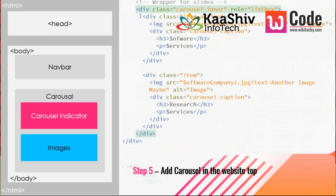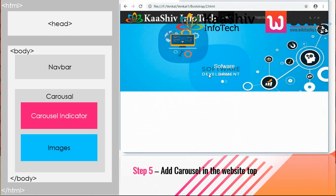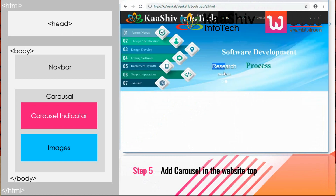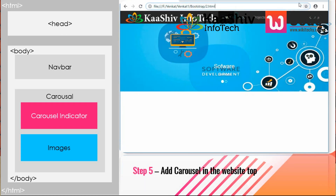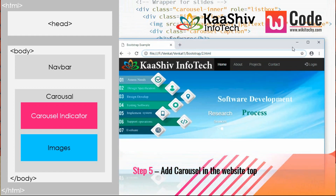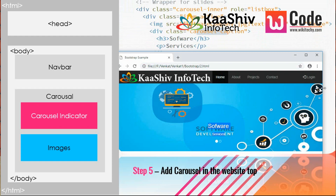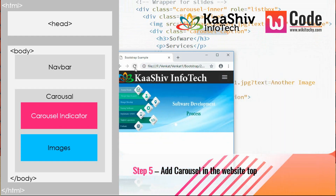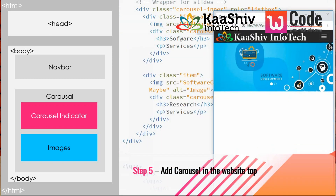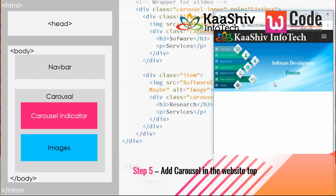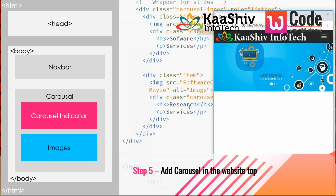I specify the first item as active in the carousel, provide the image, and add a caption. The caption I'm giving is 'Software Services' for a software company website. You can see the carousel is working and moving. For the next image, the responsive design automatically resizes the image based on the device size.